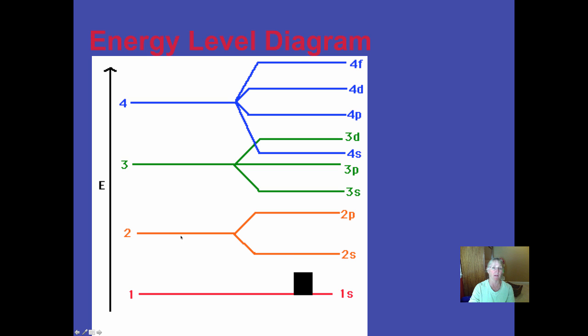At the second energy level, there's two. You can divide them into two. There's the spherical and the dumbbell orbitals. At the third energy level, there's the spherical dumbbell and double dumbbells. And now you're seeing it's starting to get kind of crazy because the sub-levels start overlapping.